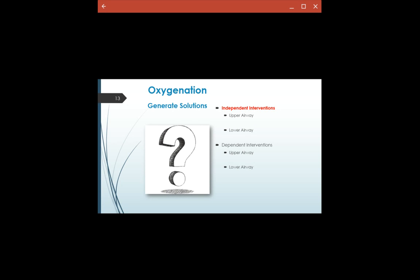For our dependent upper airway interventions, that's going to be intubating, putting in that OPA, the NPA, intubating or putting in a trach. With the lower airway, our dependent interventions would be to add oxygen or do a thoracentesis.